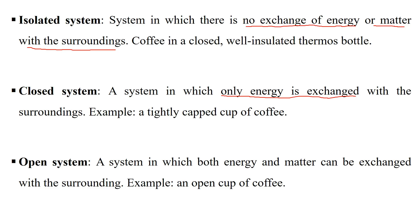In an open system, both energy and matter can be exchanged with the surrounding. It is a system which can exchange matter with the surrounding and also exchange energy with the surrounding. For example, if you have an open cup of coffee, there is an exchange of both heat and matter with the surrounding.